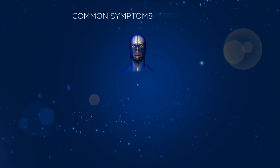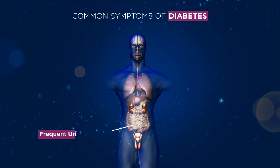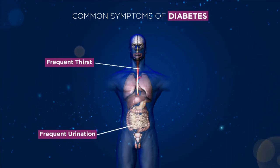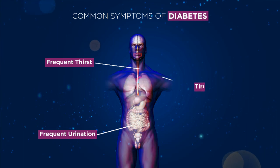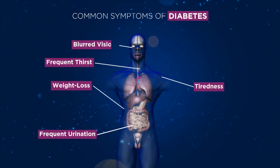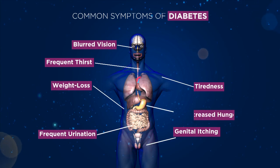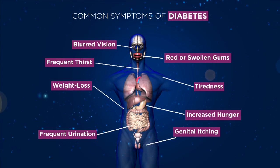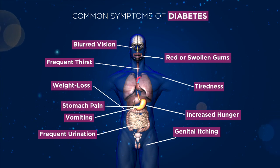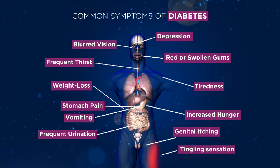The most common symptoms of diabetes are frequent urination, frequent thirst, tiredness, weight loss, blurred vision, genital itching, increased hunger, red or swollen gums, vomiting, stomach pain, depression, and tingling sensation or numbness in the hands or feet.